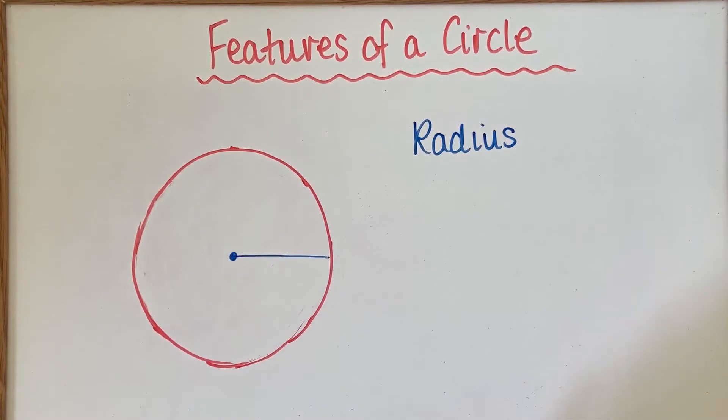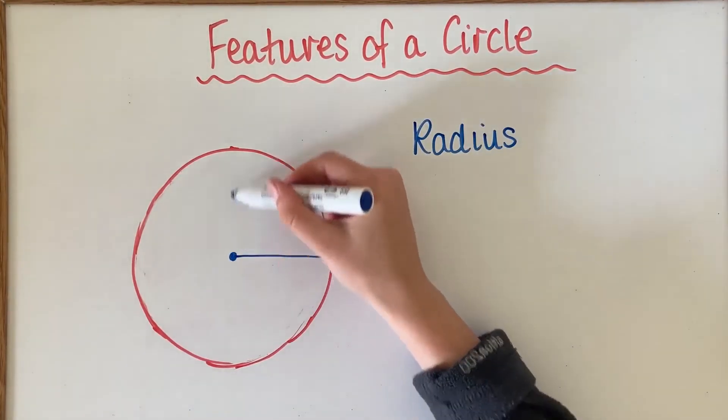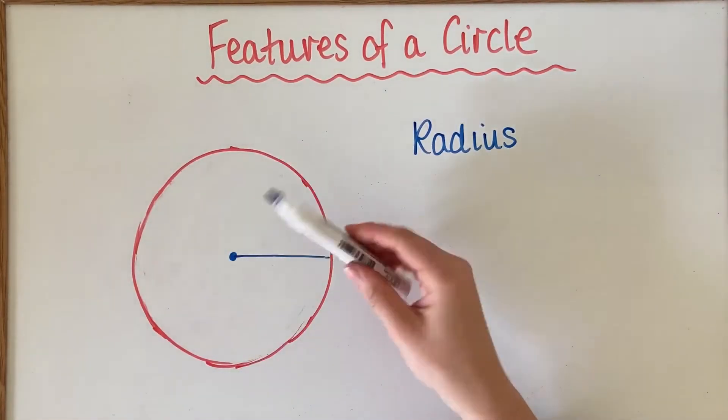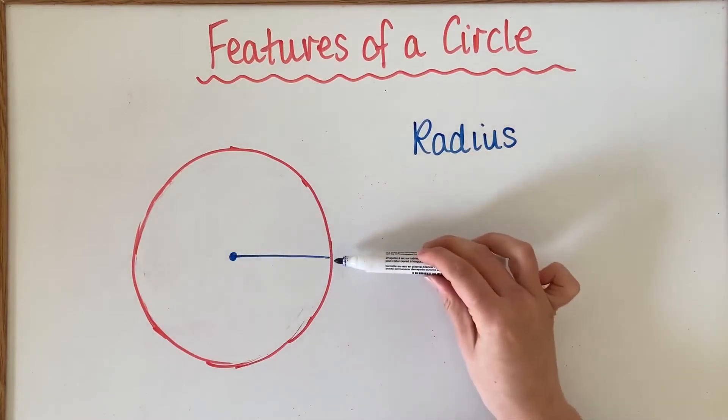So it's halfway across the circle at its widest point. Doesn't matter which direction it goes, the radius could go this way or this way. Think of it as like the hour hand on a clock, it measures straight from the middle all the way out to the outside.